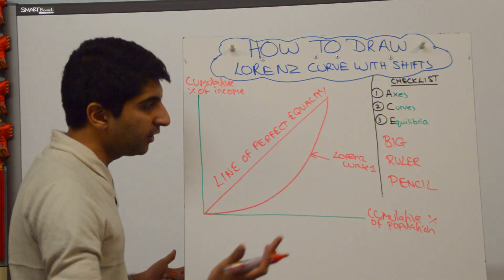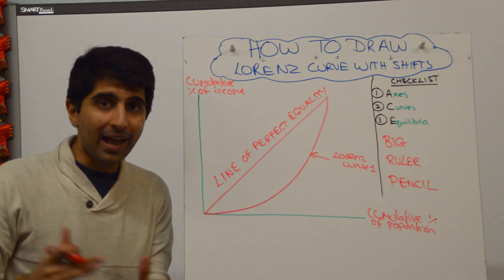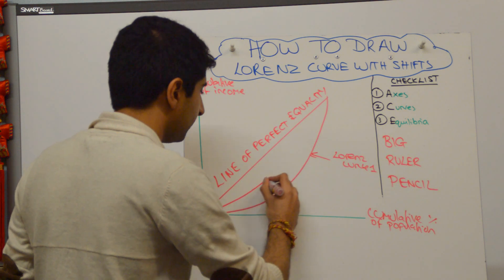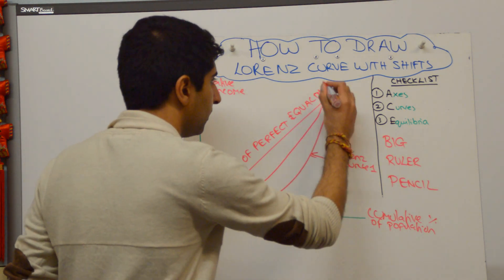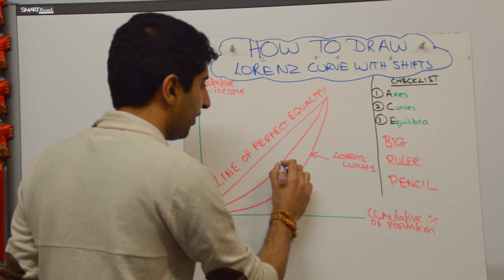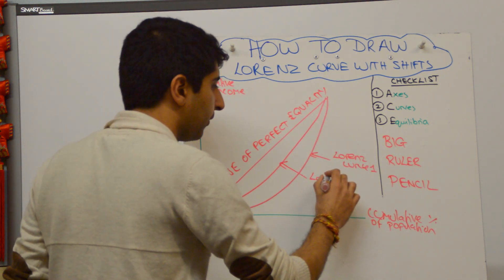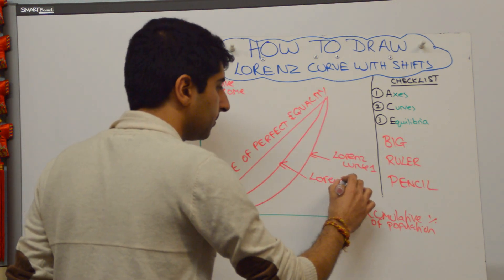So, if you are shifting your curve to show less income inequality, you will just do something like this. And that would be your Lorenz curve — you label that Lorenz curve 2.